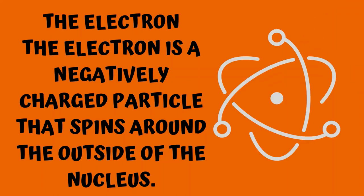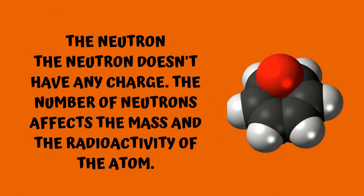The Electron. The electron is a negatively charged particle that spins around the outside of the nucleus. The Neutron. The neutron doesn't have any charge. The number of neutrons affects the mass and the radioactivity of the atom.